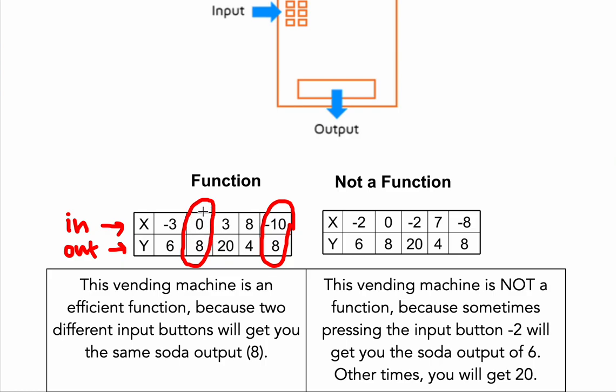If you think of this as a vending machine, it's actually just a really efficient vending machine. Sometimes somebody can press the 0 button to get that soda. And other times, if let's say that soda is out, they can also press the negative 10 button to also get that same soda. So it's just being very efficient. So that is a function.